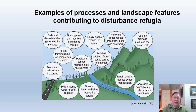This figure shows examples of processes and landscape features that help form disturbance refugia. These can be natural, like terrain shading, rivers and lakes, or moist soils, or human constructs like roads and trails. Roads can have many negative ecological effects, but can serve as fire breaks.